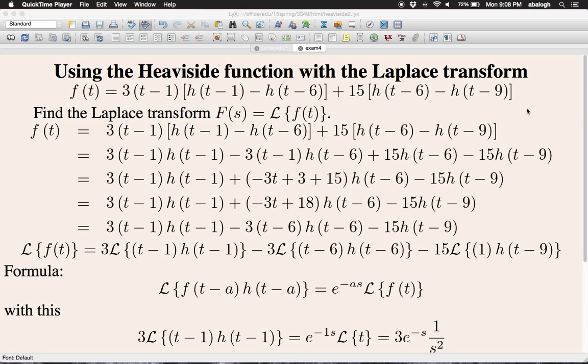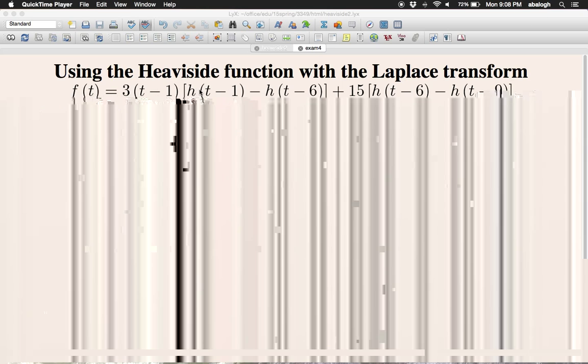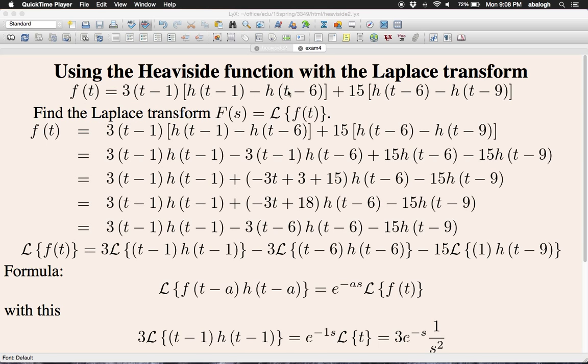We started in the previous example with a piecewise function and obtained a representation of it using the Heaviside function. This is the slanted part, and this is the horizontal part. Now we have to take the Laplace transform of the function.